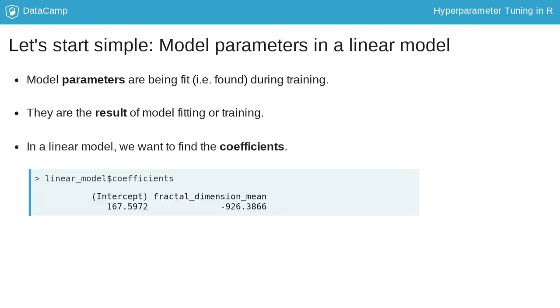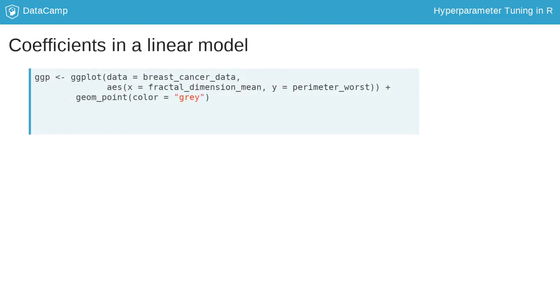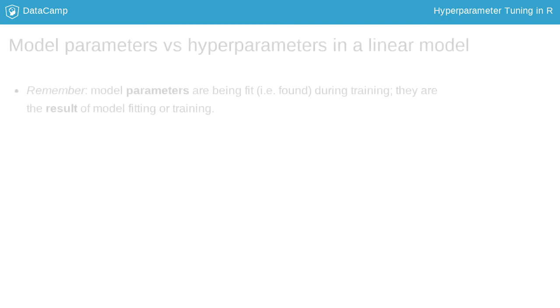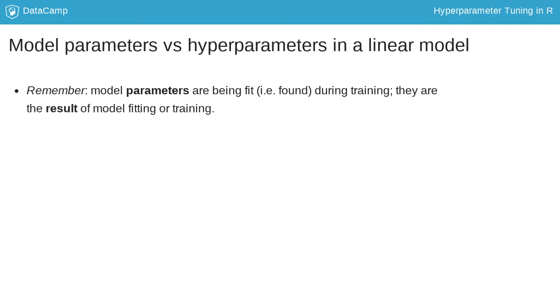Let's look again at our linear model. Here we want to find the coefficients, which we can think of as the slope and intercept of our model. Slope and intercept are best understood when visualized. They describe the best line through our data points. Slope describes the steepness of this line, whilst intercept describes the point where our line crosses the y-axis. Okay, you now know what model parameters are.